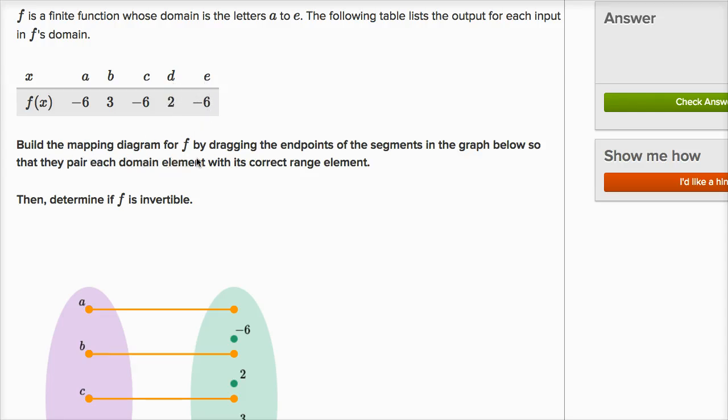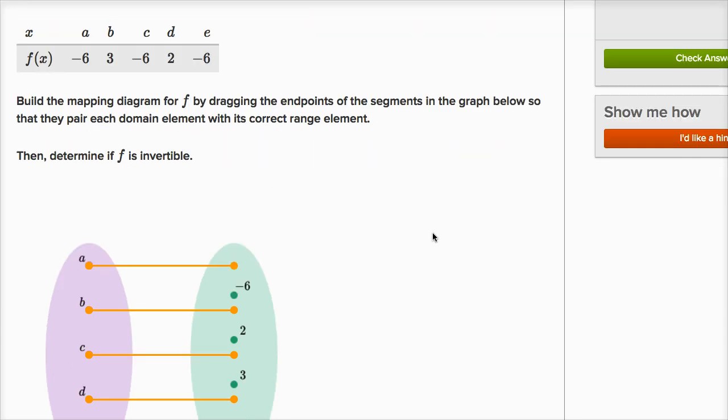Build the mapping diagram for F by dragging the endpoints of the segments in the graph below, so that they pair each domain element with its correct range element. Then determine if F is invertible.